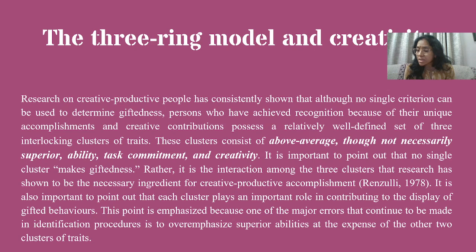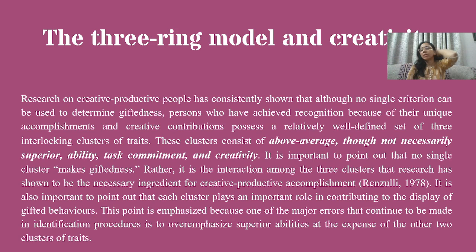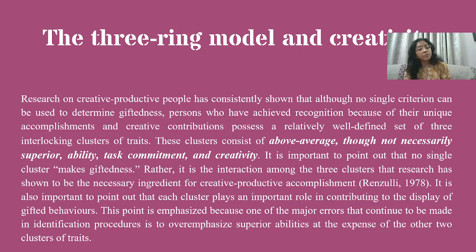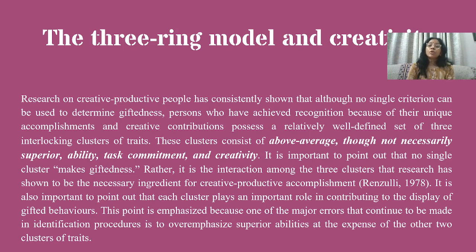तीन गुणों का set अगर individual के पास होगा तो वो gifted होगा। क्या-क्या होना चाहिए? These clusters consist of: first, above average ability (though not necessarily superior ability); second, task commitment; and third, creativity। It is important to point out that no single cluster makes giftedness - सिर्फ creativity से gifted नहीं होगा, सिर्फ commitment से giftedness नहीं आएगी, सिर्फ superior ability से भी नहीं। Rather, it is the interaction among the three clusters that research has shown to be the necessary ingredient for creative productive accomplishment।